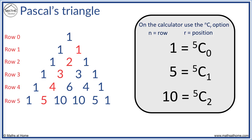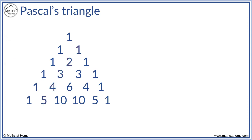This process can be used to calculate any number in the triangle. For example, this 4 can be found in row 4 position 3, so we enter 4C3 on the calculator. Each row of the triangle tells us the coefficients in the binomial expansion depending on the power. So the second row is for a binomial to the power of 2, the third row is for a binomial to the power of 3, and so on.